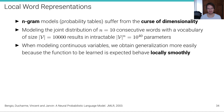This is where the idea for neural language models came from. I reference the paper by Bengio et al., 'Neural Probabilistic Language Model,' JMLR 2003. When modeling continuous variables, we obtain generalization much more easily than in the discrete case, because the function to be learned is expected to behave locally smoothly. This has been observed in other contexts before.